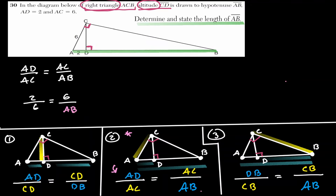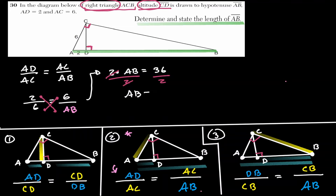Solving for AB using cross multiplication: 2 × AB = 6 × 6 = 36, so AB = 36 ÷ 2 = 18.